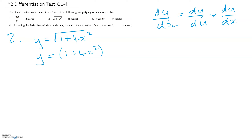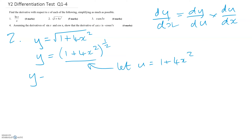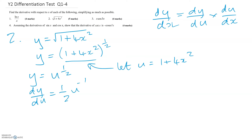If you're not sure what to substitute in for u, think about where you would put brackets in the original question. Everything underneath the square root — let u equal 1 plus 4x squared. This makes things easy to differentiate. With that substitution, dy/du is a half times u to the minus a half. You also need du/dx, which is just 8x.